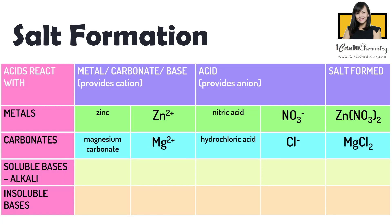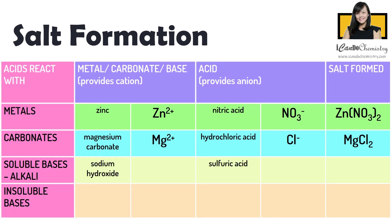Let's move on to the next reaction: reaction of acids with bases. For bases, there are soluble bases which we call alkali, or insoluble bases, which can be metal oxides or metal hydroxides. Let's focus on the reaction of acid with alkali. We have sulfuric acid with sodium hydroxide. Sodium hydroxide provides the cation — hence we have sodium ion, Na+ — and sulfuric acid will provide the anion, hence we have sulfate ion, SO4 2-.